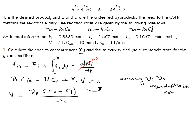FI0 can be written as upsilon 0 CI0 minus upsilon CI plus RI times V equals 0. We can solve for V: V equals upsilon 0 times (CI0 minus CI) divided by minus RI. Here we are assuming upsilon equals upsilon 0 because we have a liquid phase reaction. We have a nice looking design equation.